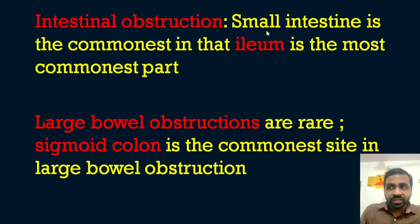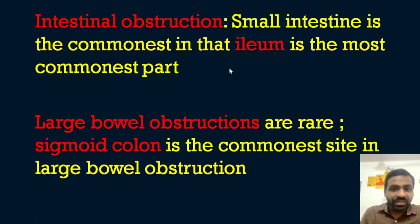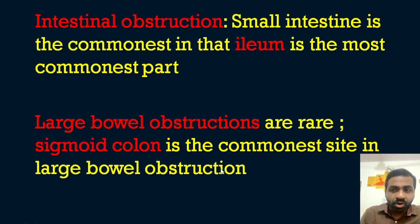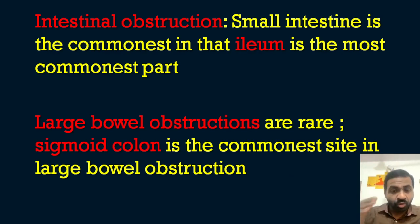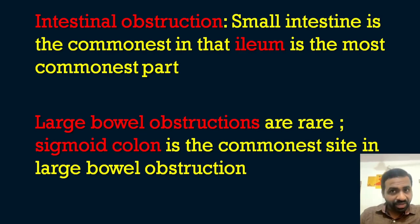Among small intestine and large intestine, small intestinal obstruction is most common, and within that the ileum is the most common site. Large bowel obstruction is rare, and if it occurs, the sigmoid colon is the most common site. So: small bowel obstruction — ileum; large bowel obstruction — sigmoid colon.